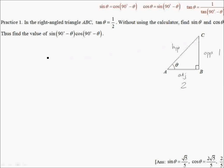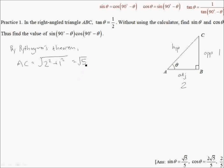Let us first find side AC. By Pythagoras' theorem, AC is equal to the square root of 2 squared plus 1 squared, which is simply the root of 5. Now without using the calculator, find sinθ and cosθ. sinθ is given as opposite over hypotenuse, which is 1 over root 5. Next, cosθ is given as adjacent over hypotenuse, which is 2 over root 5.